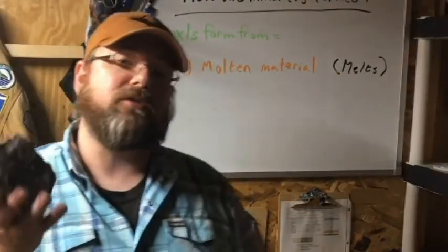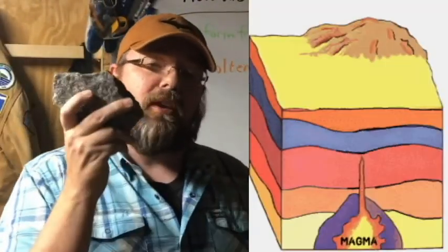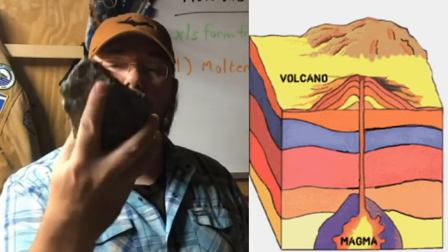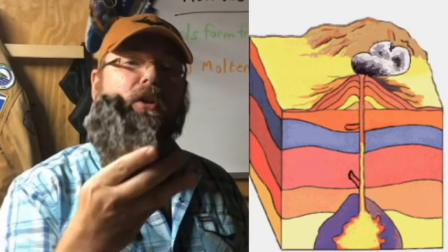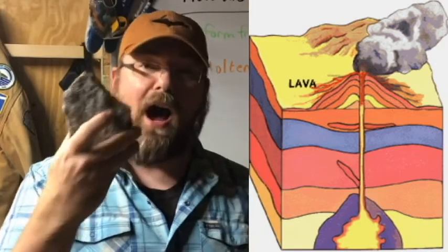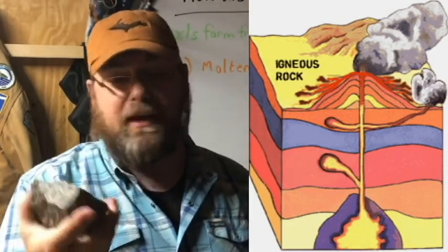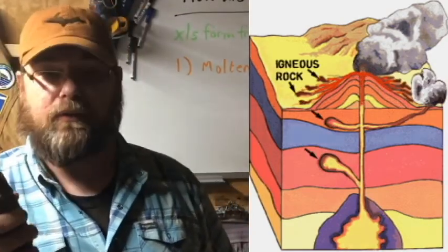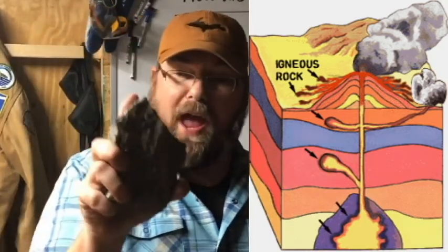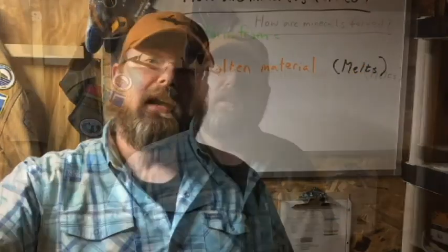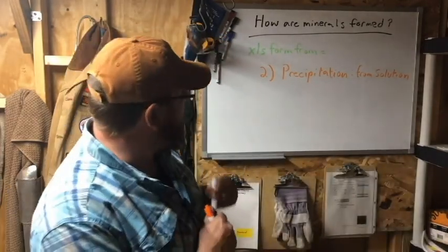Surface cooling leads to rocks such as basalts, rhyolites, and dacites. If you cool underground, you tend to be more insulated, lose heat more slowly, and form better crystals — granitic type rocks. This is probably a granite; I can tell it has quartz in it. You get granites and things like the sodalite-rich rocks shown in a previous video — coarse-grained igneous rocks. Number two is precipitation.